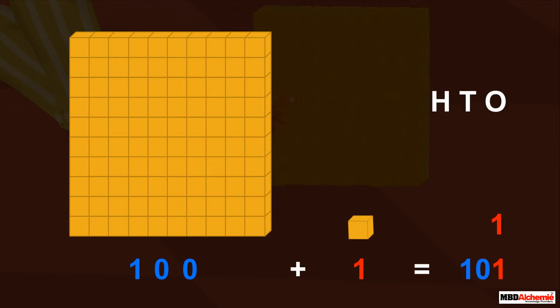1 is written under one's column, 0 under ten's column and the other one under hundred's column.